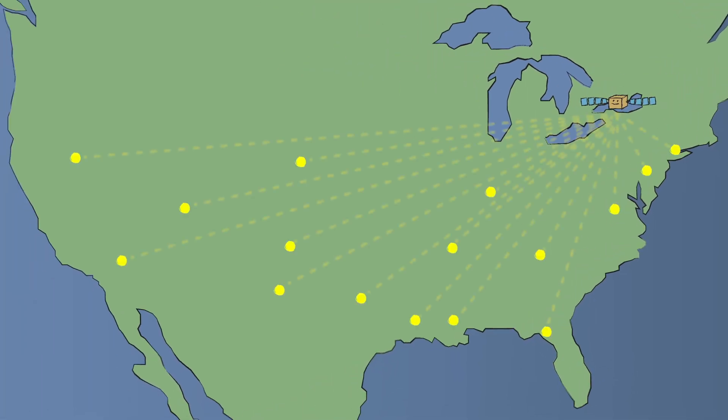From there, the maps are picked up by antennas at the National Weather Service Forecast offices in each region. There are more than 100 offices.